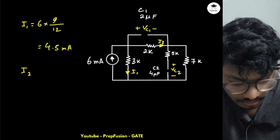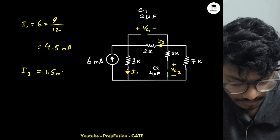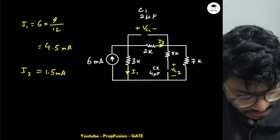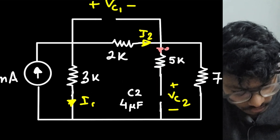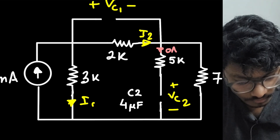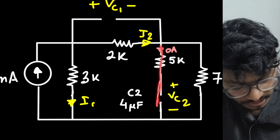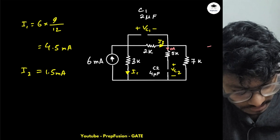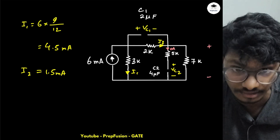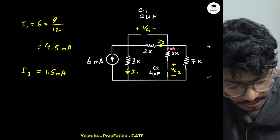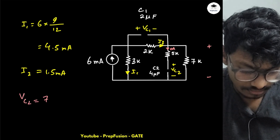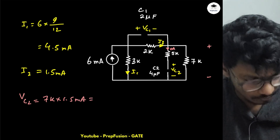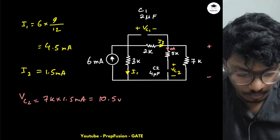We need to find VC1 and VC2. The current through the capacitor branch is zero. The drop across C2 is the same as the drop across the 7 kΩ resistor, which is 7 kΩ × 1.5 mA = 10.5 V. So VC2(∞) = 10.5 V at steady state.